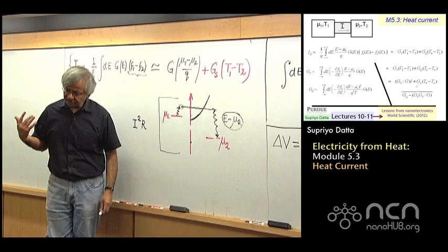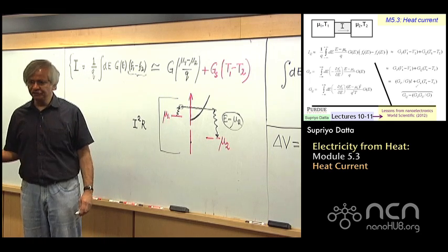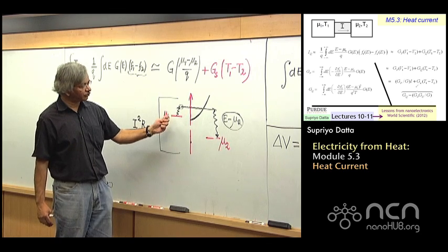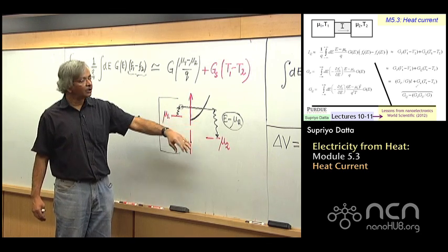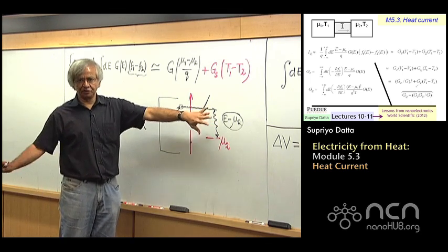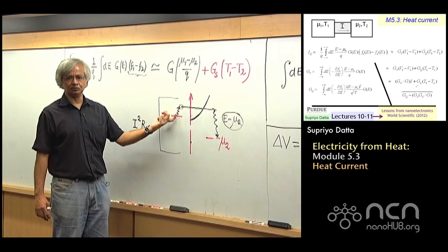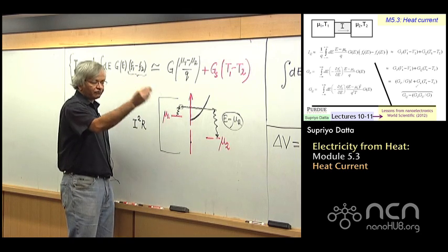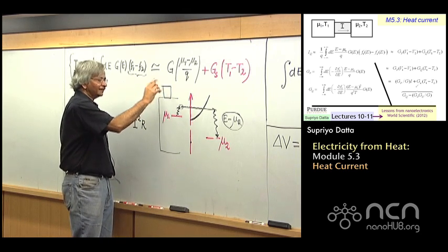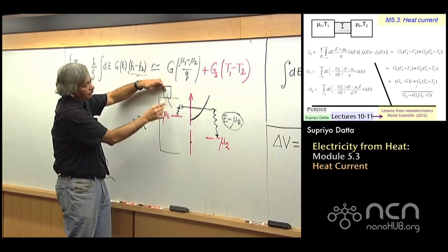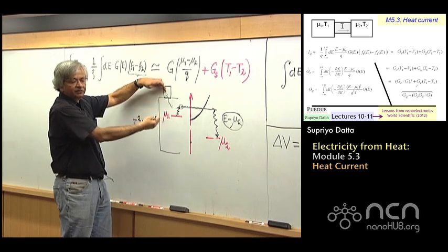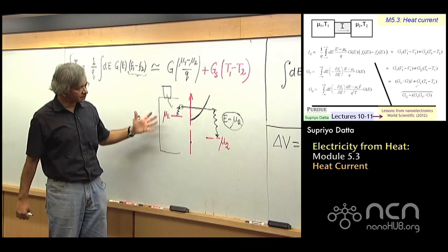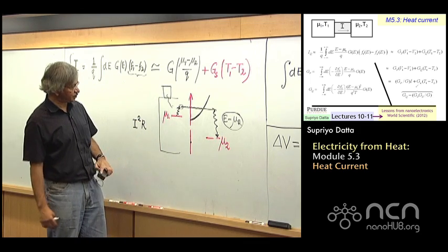And this is the principle of this thermoelectric refrigeration, essentially. That when you have a conductor like this, every time an electron goes from left to right, one contact gets hot, sure enough. But the other contact actually gets cooled, which means if you were to place your favorite soft drink, whatever that is, on this contact, that's where all the heat would come from. That's where it would be absorbing the heat from, and that's where it would cool that thing down. And that's what I said is the principle of this thermoelectric refrigeration.